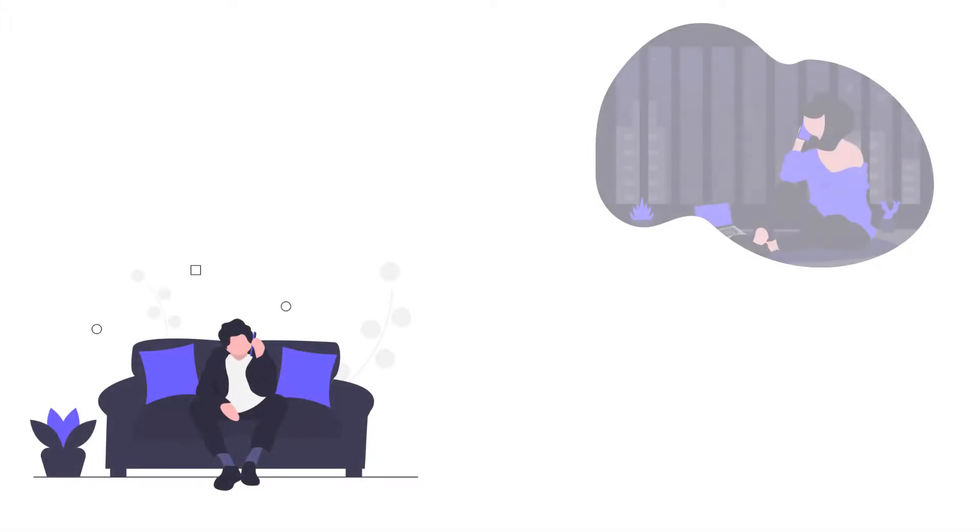That's where the persistent client communication model comes in, because it solves that problem. A great parallel for a persistent client-to-server communication model is a telephone call. Just think about a normal telephone call — once you make that call, it rings, the other person picks up, and you're continuously connected in a conversation from that point on. As long as the two people are connected on that phone call, they're always listening for the other person to say something, or responding, or talking back and forth — and that communication continues on and on.